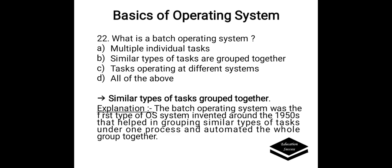What is the batch operating system? Option A. Multiple individual tasks, B. Similar types of tasks are grouped together, C. Tasks operating at different systems, D. All of the above. Correct answer is B, similar types of tasks are grouped together. The batch operating system was the first type of operating system, invented around the 1950s, that helped in grouping similar types of tasks under one process and automated the whole group together.